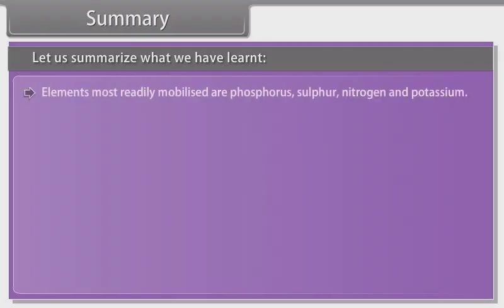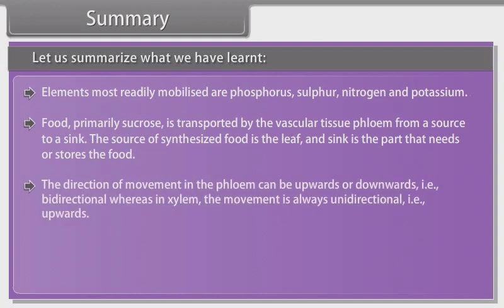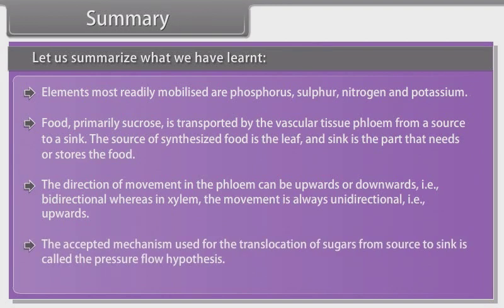Elements most readily mobilized are phosphorus, sulfur, nitrogen, and potassium. Food, primarily sucrose, is transported by the vascular tissue phloem from a source to a sink. The source of synthesized food is the leaf, and the sink is the part that needs or stores the food. The direction of movement in the phloem can be upwards or downwards — called bidirectional — whereas in the xylem, the movement is always unidirectional, meaning upwards. The accepted mechanism used for the translocation of sugars from source to sink is called the pressure flow hypothesis.